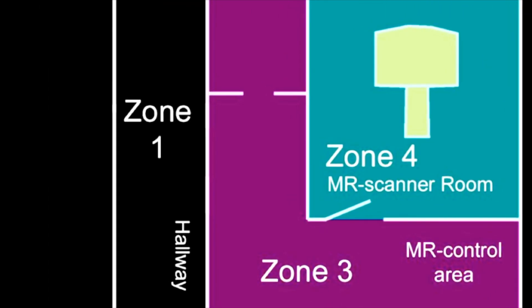Zone 1 includes all areas freely accessible to the general public. This is where the magnetic field poses no hazards, such as the entrance to the MR facility.